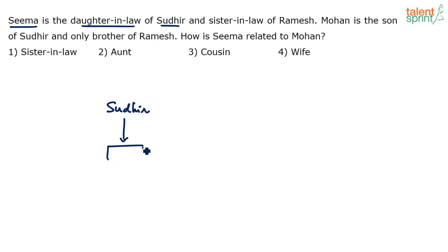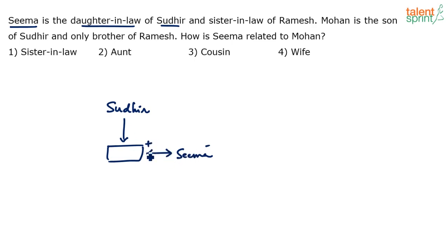Daughter-in-law means your son's wife. So Sudhir has got a son — we don't know who that son is yet, but that son's wife is Sima. Following the conventions we discussed: a male person is represented using the symbol here, and he is married to Sima. A married couple is always represented using a double-headed arrow. Sudhir to his son is a single-headed arrow, but the son and Sima are married, so we use a double-headed arrow — which means this is a couple.